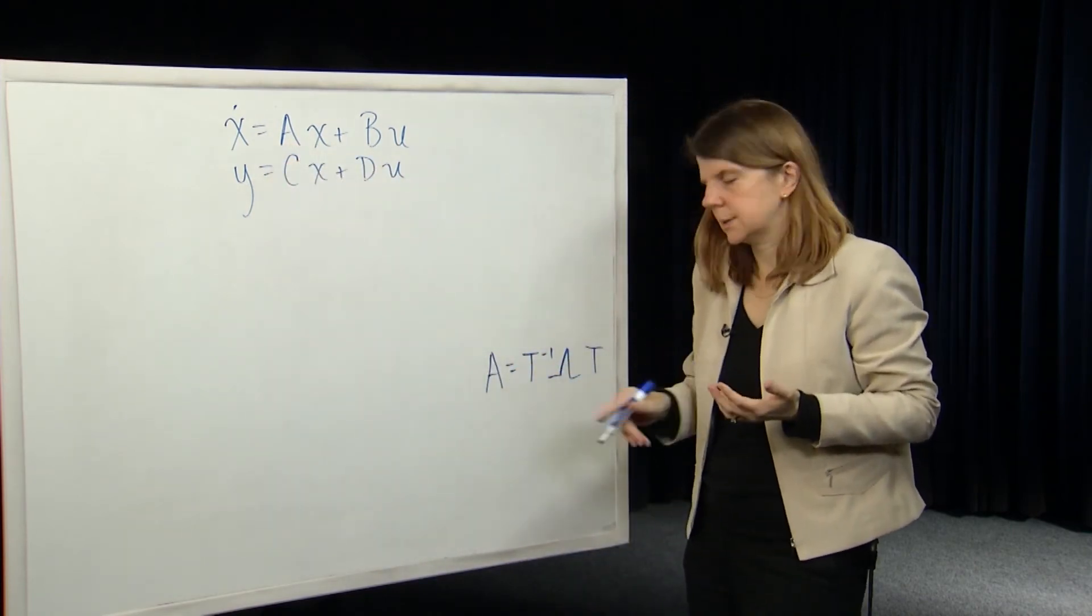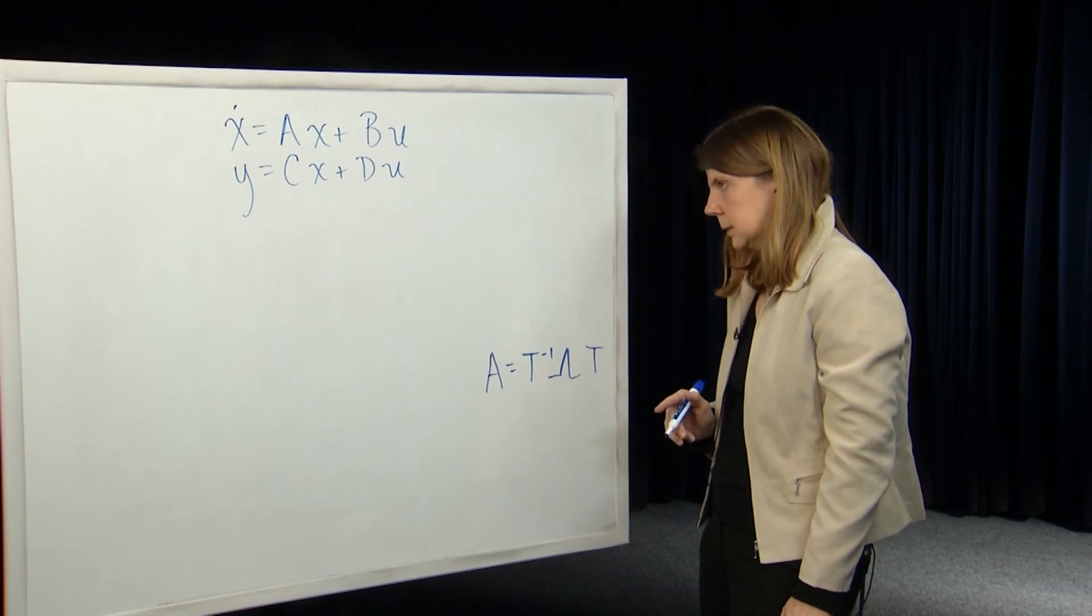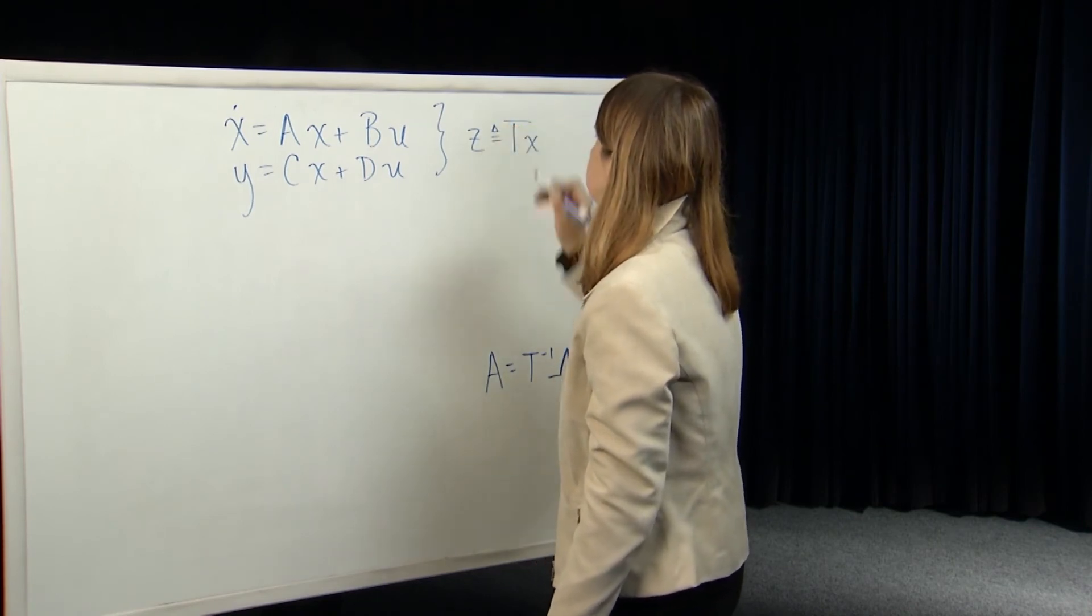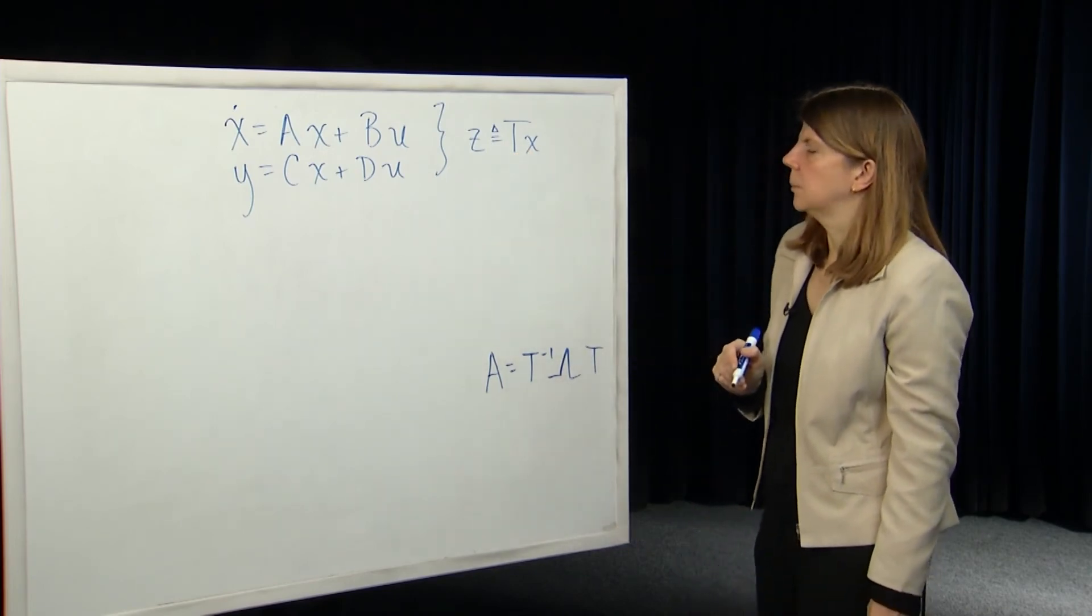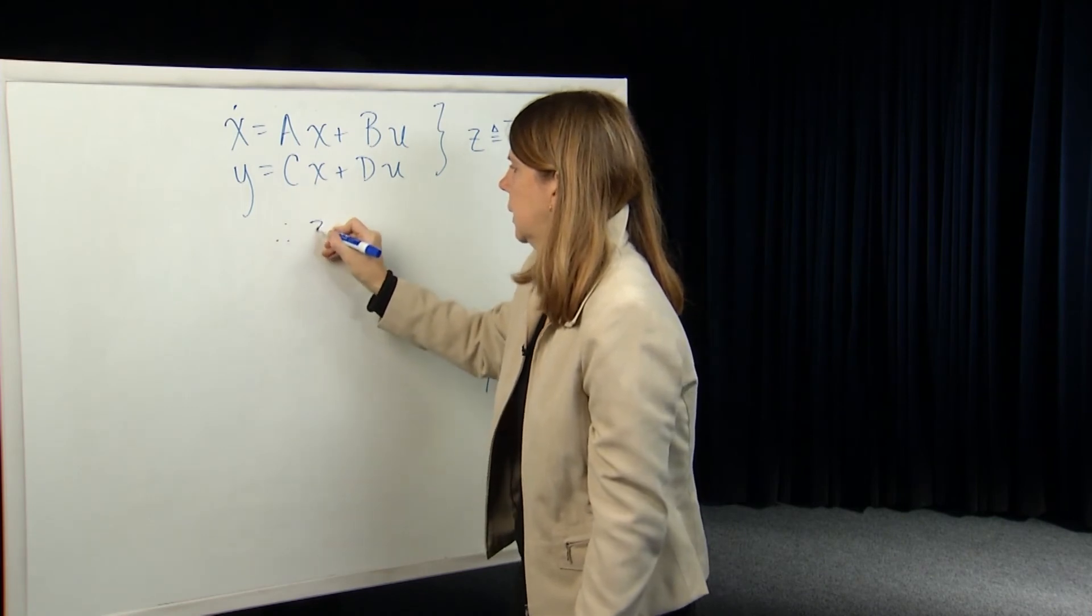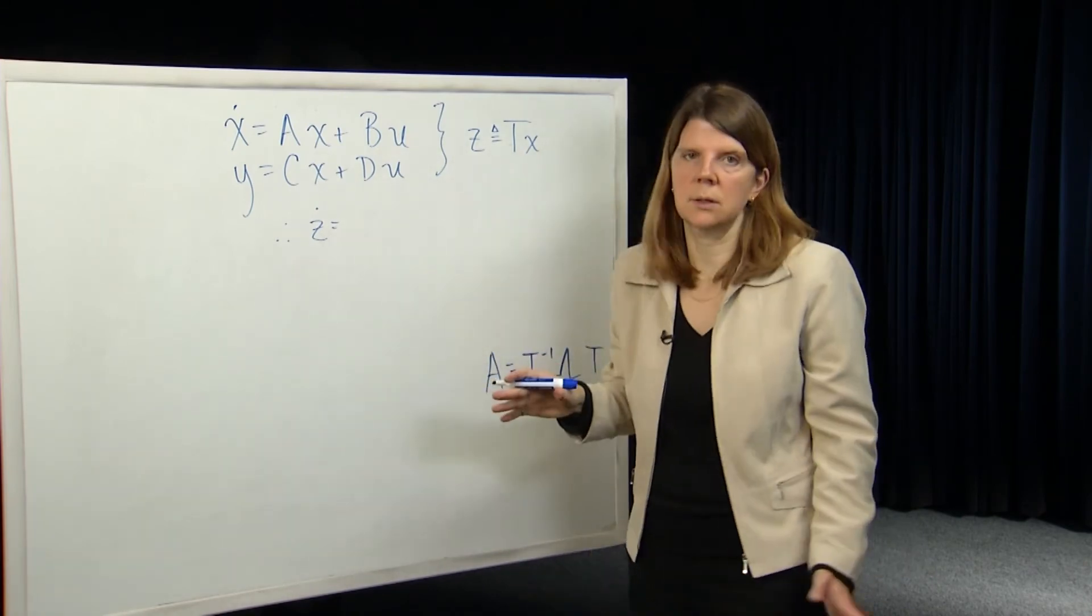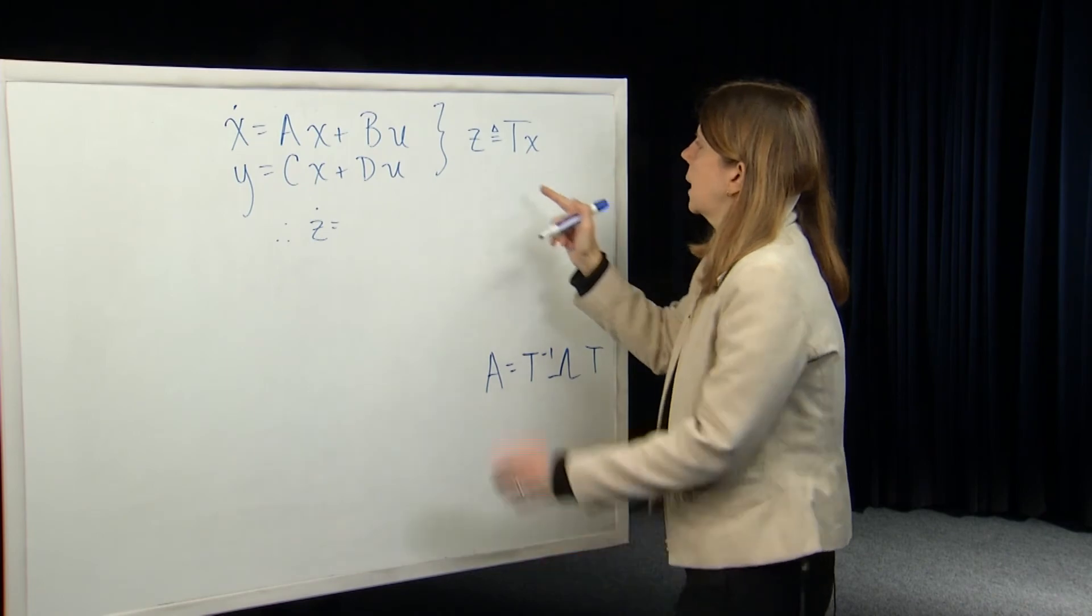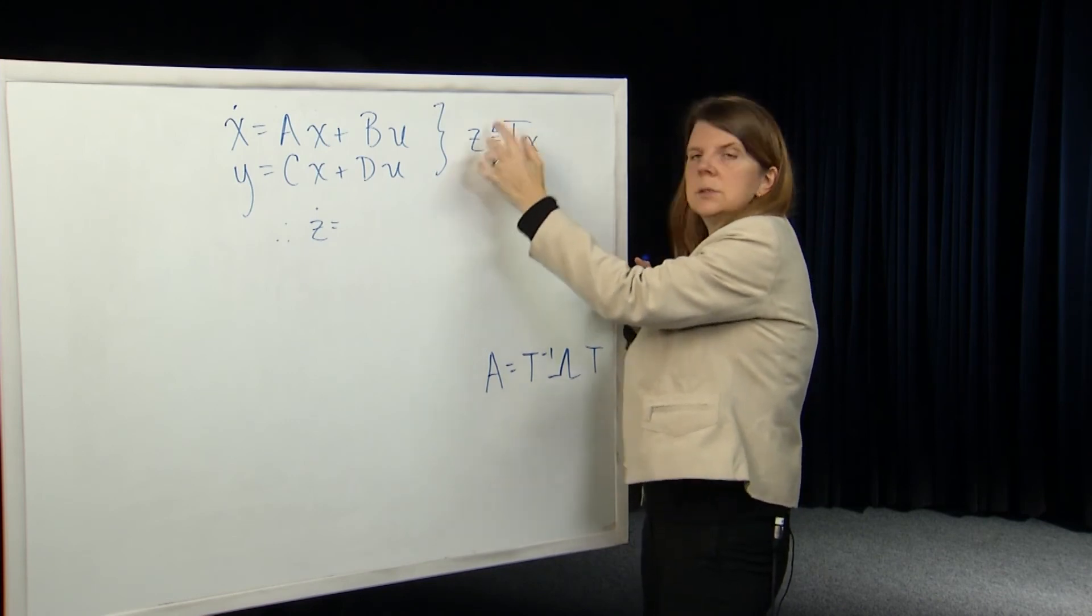And suppose we consider a state transformation. So, let's define a new state z which is equal to T times x. So, the matrix T, which is the inverse of the matrix whose columns are the eigenvectors of A, multiplied, pre-multiplied by the state vector x. So, we can calculate now the dynamics of that same system in terms of this new state vector z. So, we've performed a change of basis in our state, and that gives us a new system representation in terms of that new state. But we can always get, if we compute the dynamics of this system z, and then we solve it, we can always get back to x, because we have a well-defined relationship. So, it's a bijective relationship between z and x.